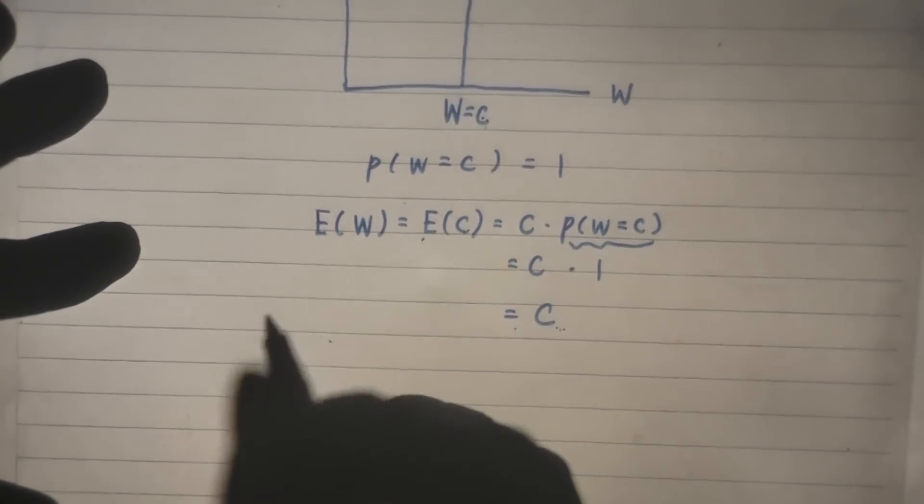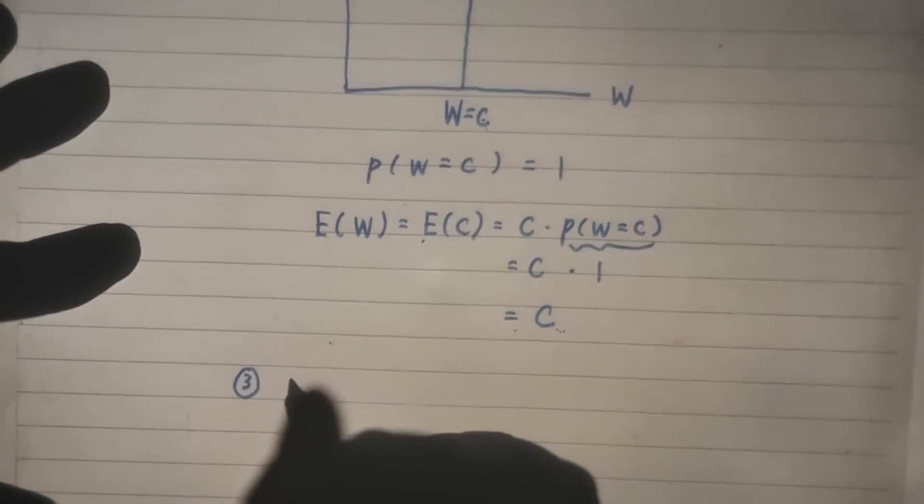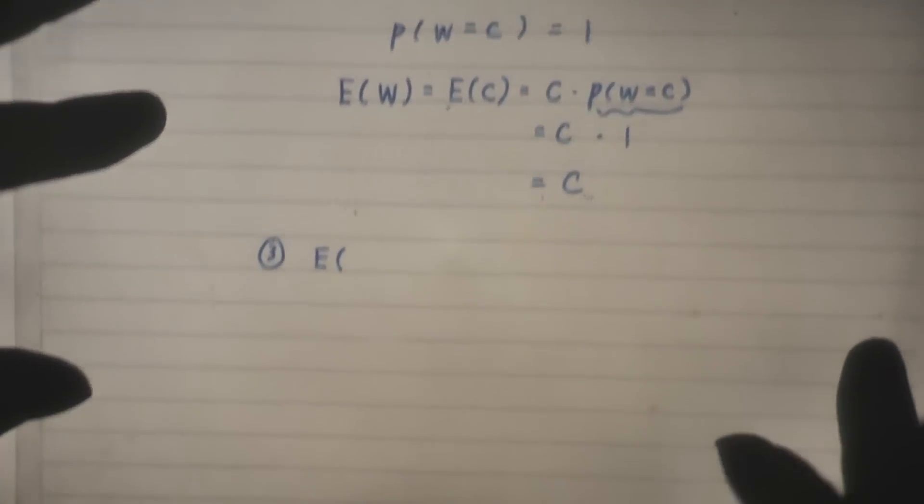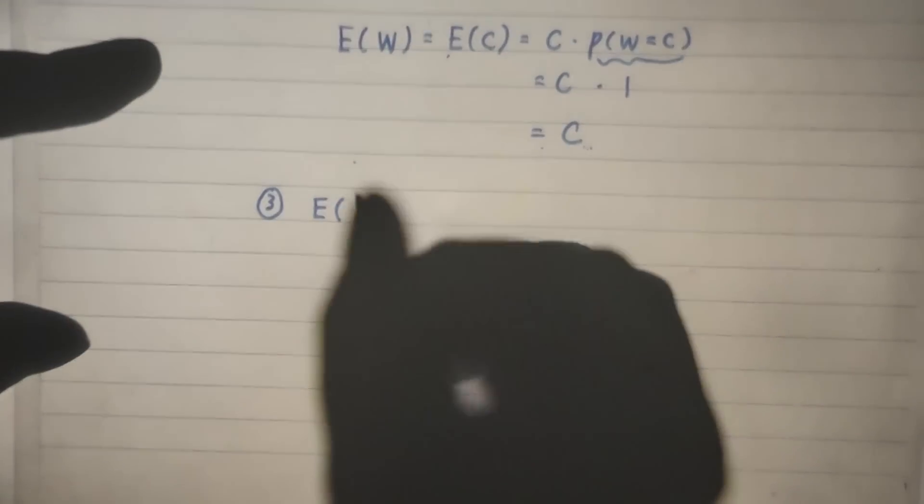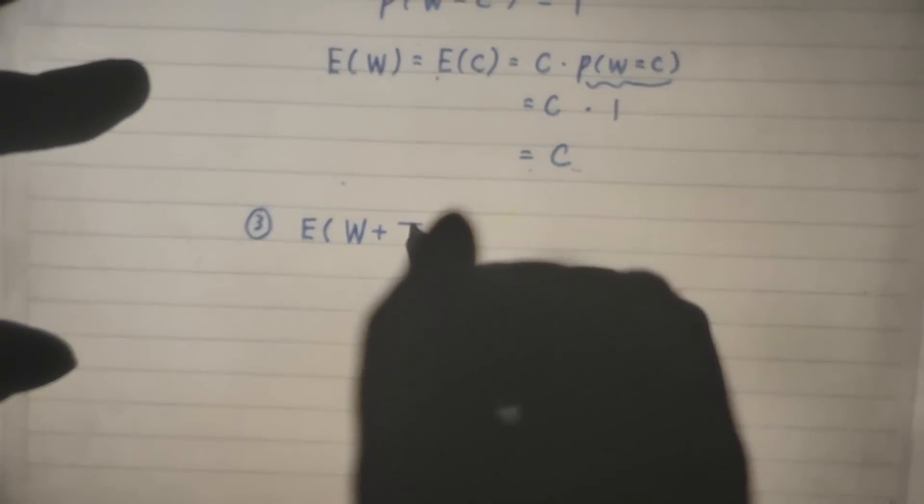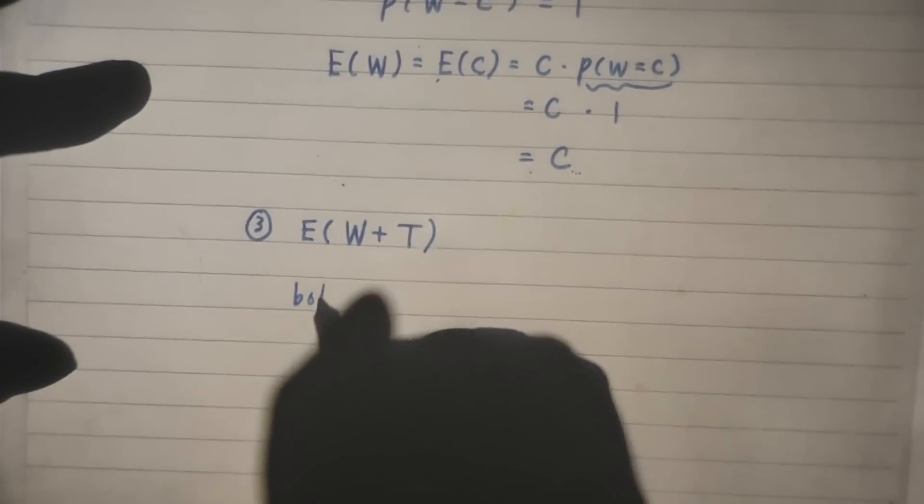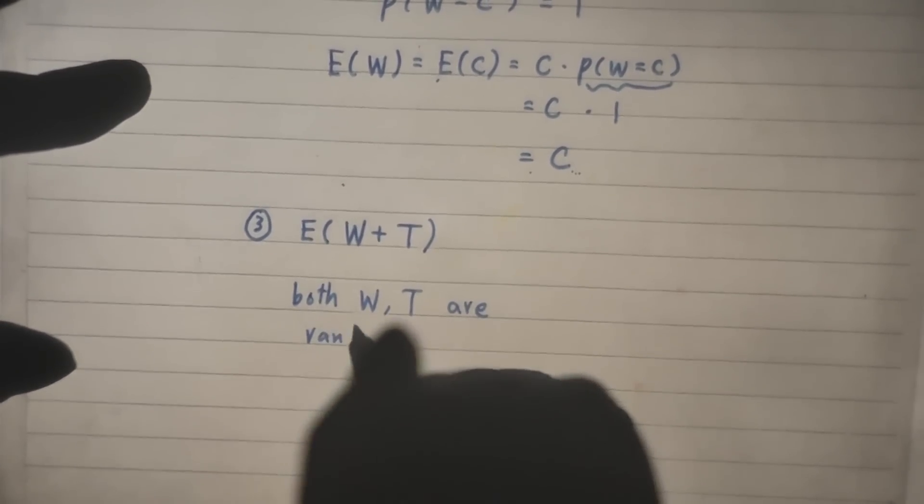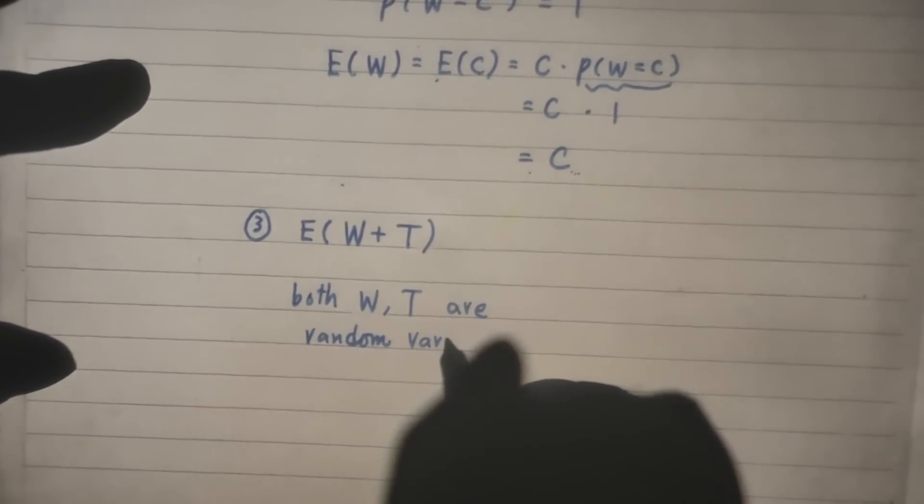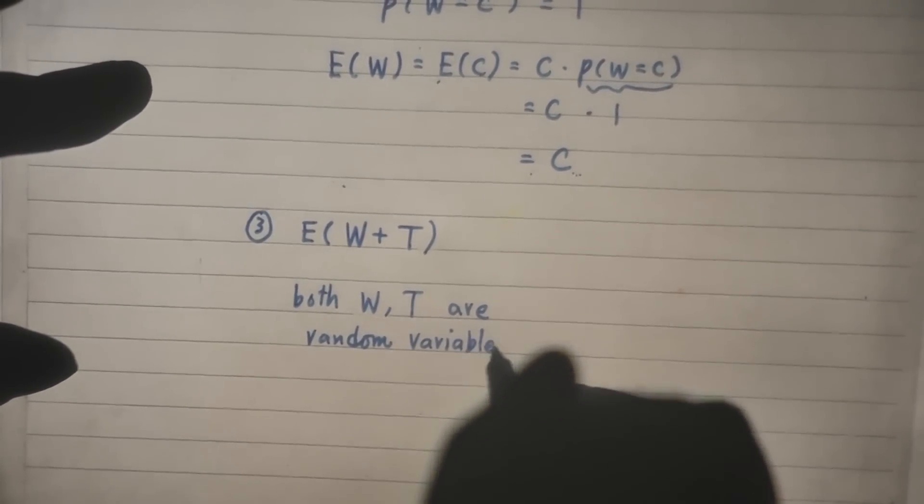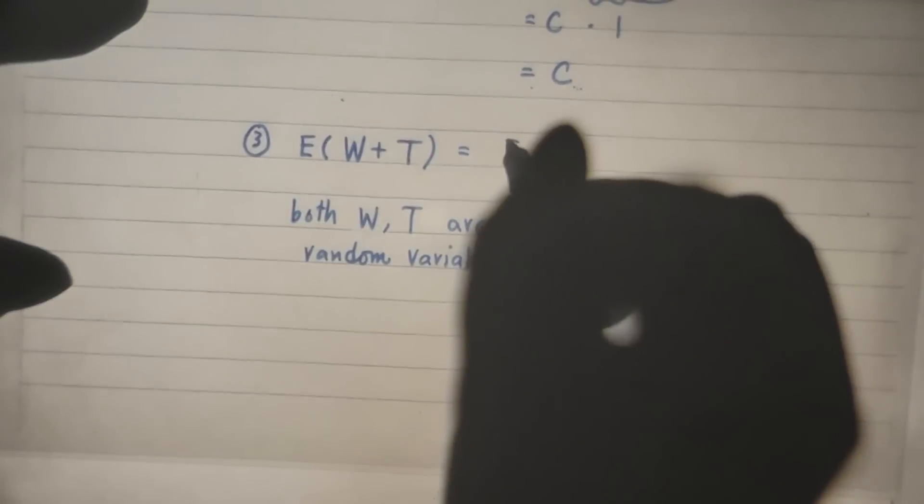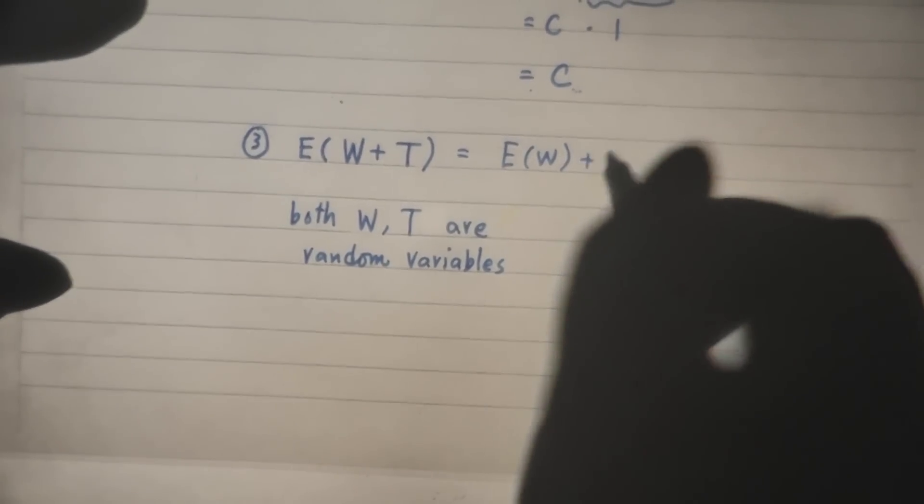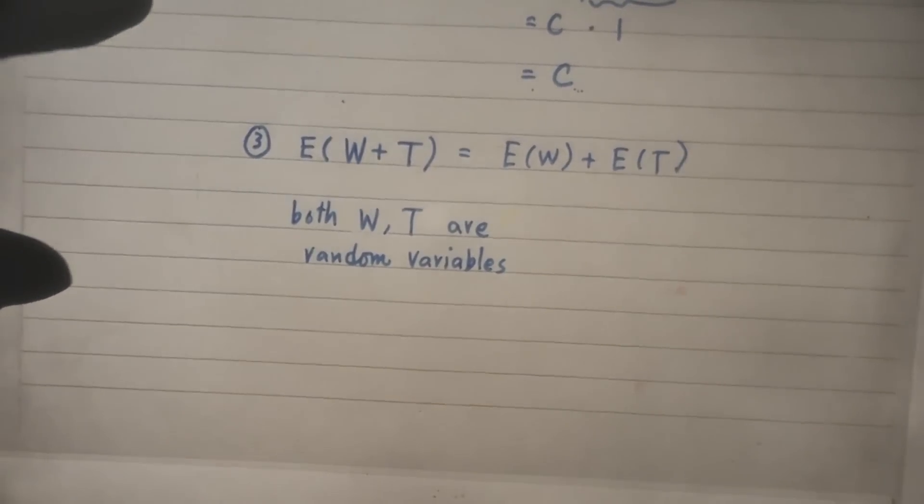Now, next one. Property three. Expected value of W plus what? Say W plus T. Both W and T are random variables. E W plus T is E W plus E T.